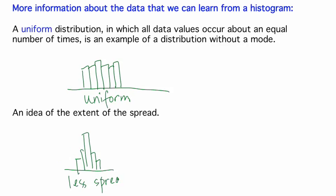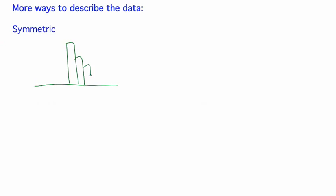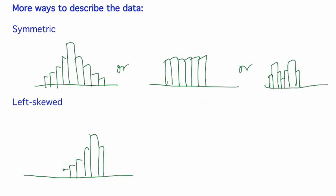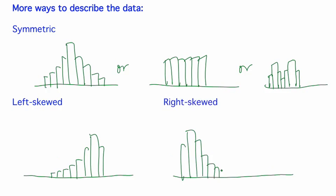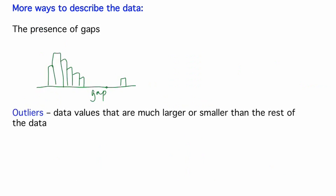From a histogram, we can also get an idea of the extent of spread in the data. We can also see the extent of symmetry in the distribution. Histograms can be symmetric, which can be the case in unimodal distributions, distributions without a mode, or multimodal distributions. Left, or negatively skewed, means it has a long left tail. Right, or positively skewed, means it has a long right tail. We can also see deviations from the overall pattern, such as gaps in the data. Outliers are data values that are separated from the rest of the data because they are much larger or much smaller.